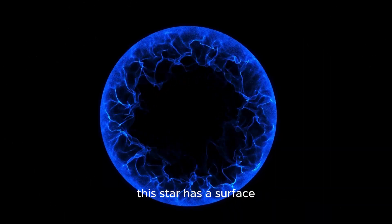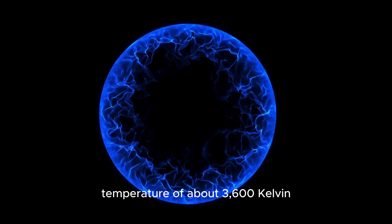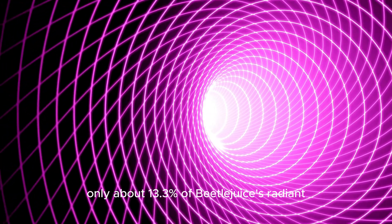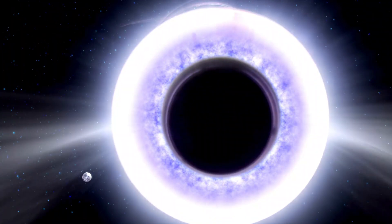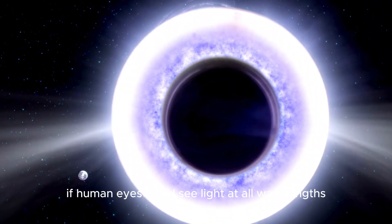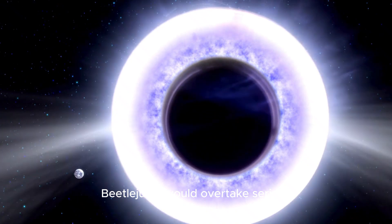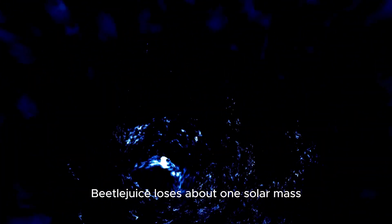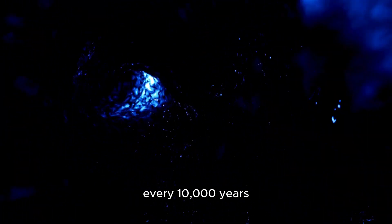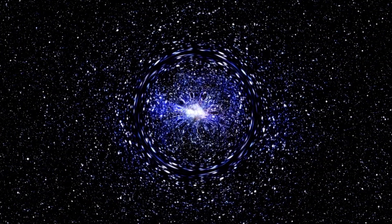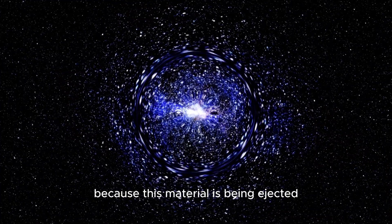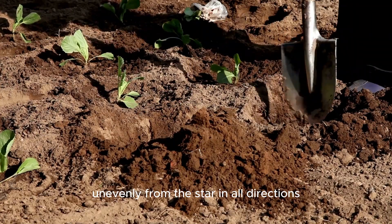This star has a surface temperature of about 3,600 Kelvin, making it cooler than the Sun. Only about 13.3% of Betelgeuse's radiant energy is visible light. If human eyes could see light at all wavelengths, Betelgeuse would overtake Sirius as the brightest star. Betelgeuse loses about one solar mass every 10,000 years.